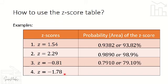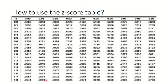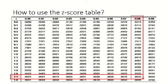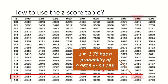Example 4: We have z = −1.78. Go to your z-score table and find 1.7, then intersect with 0.08. The intersection gives 0.9625. Therefore, the probability for z = −1.78 is 0.9625, or 96.25%.